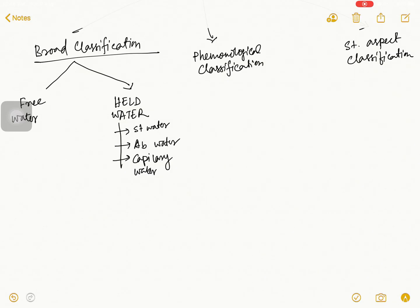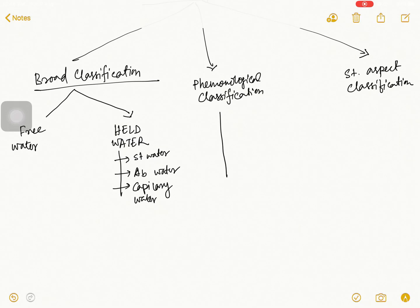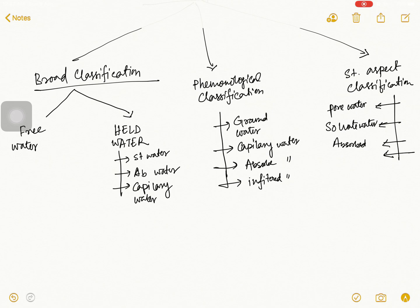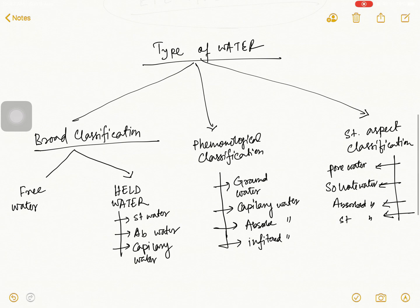Now we talk about this type of water in four sections. These are: pore water, solvated water, absorbed water, and structural water. So these are basically the types of water present in soil.